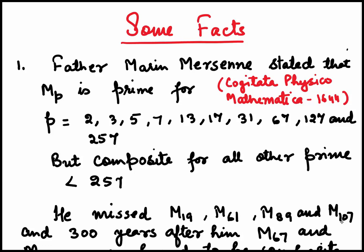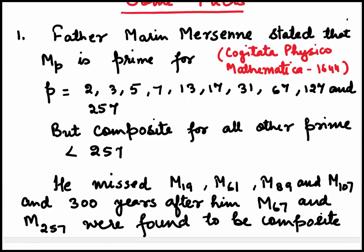Let us now look at the development of these numbers in chronological order. Father Marin Mersenne in Cogitata Physico Mathematica in 1644 stated that Mp is prime for p = 2, 3, 5, 7, 13, 17, 31, 67, 127, and 257, but composite for all other primes less than 257.